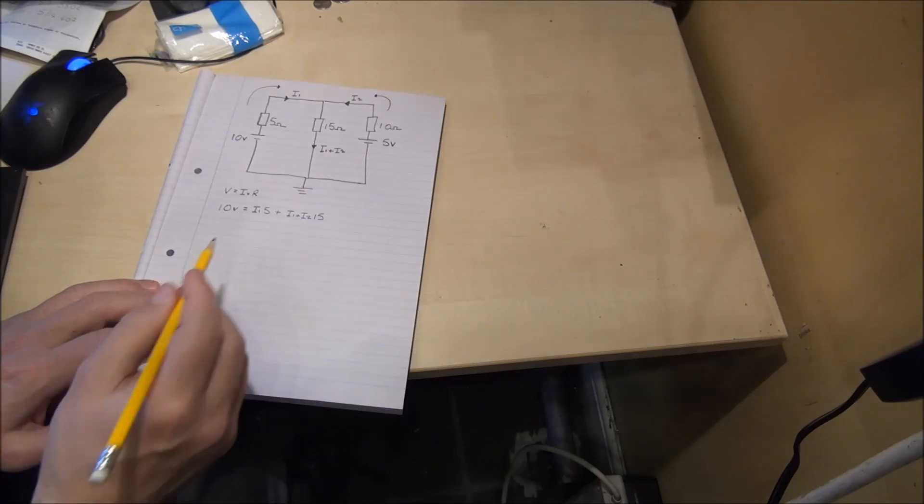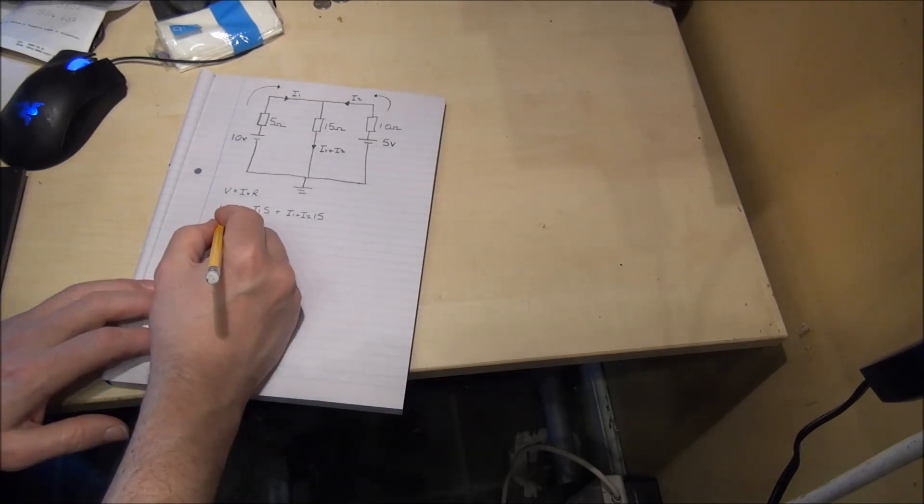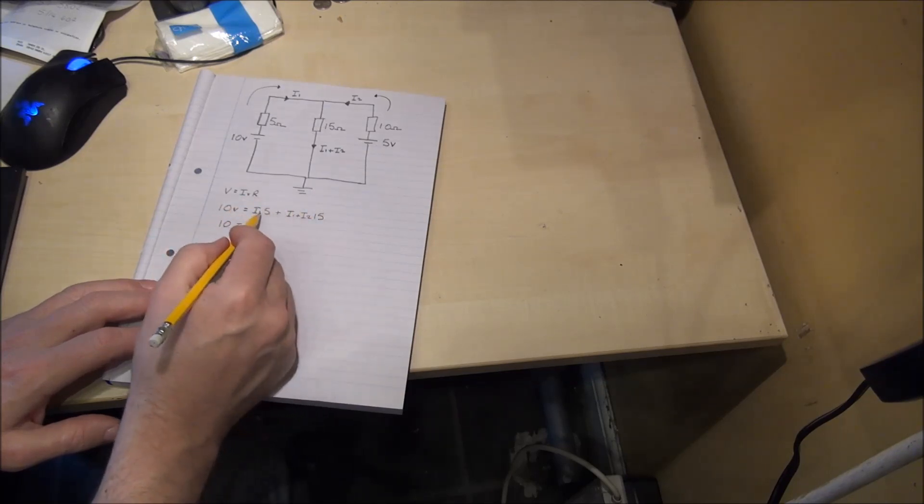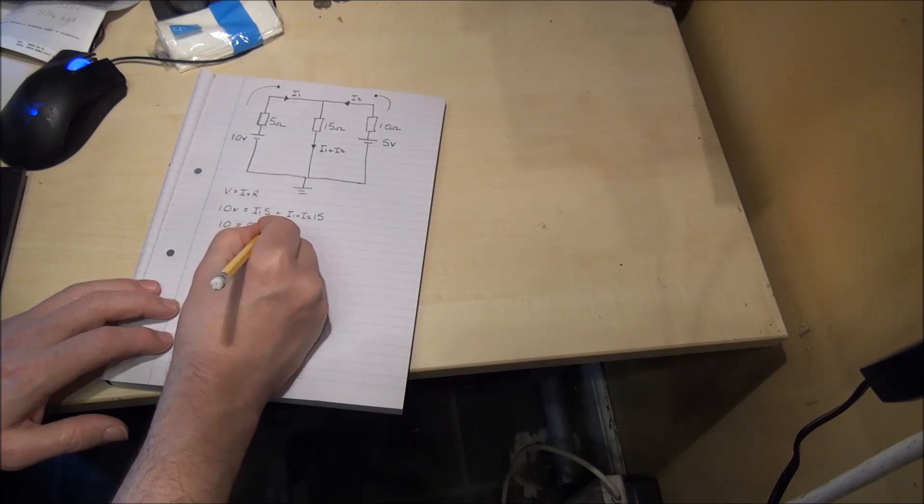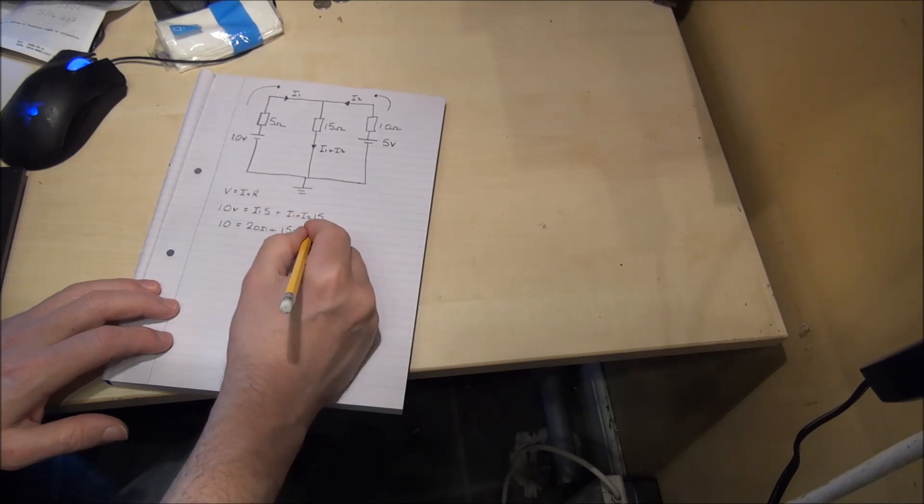We can then simplify that a little further. So we get 10 is equal to 20, that's 15 I1 plus 5 I1, plus 15 I2, and we put a little 1 in brackets next to that.